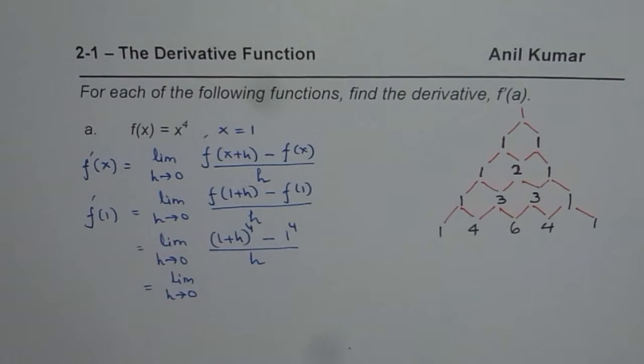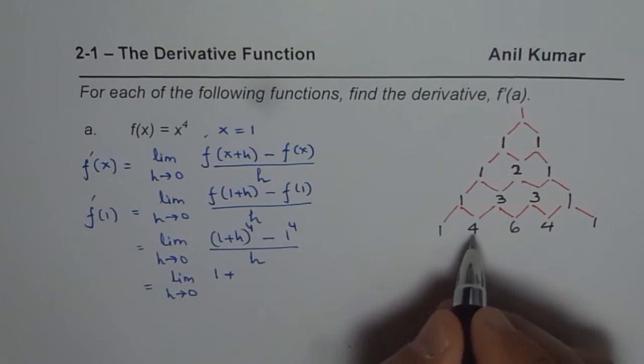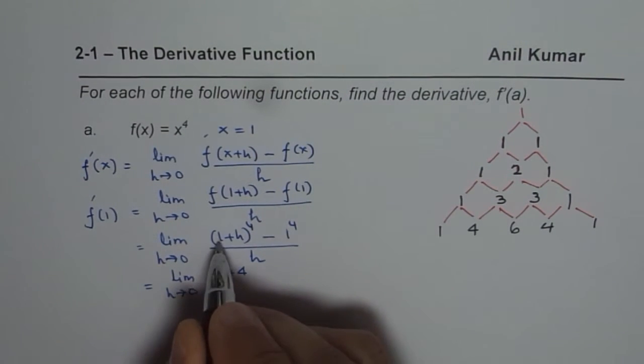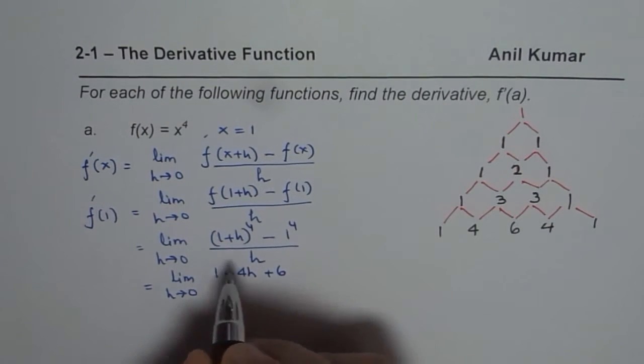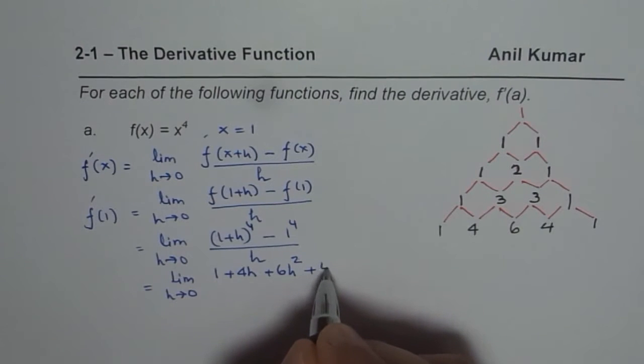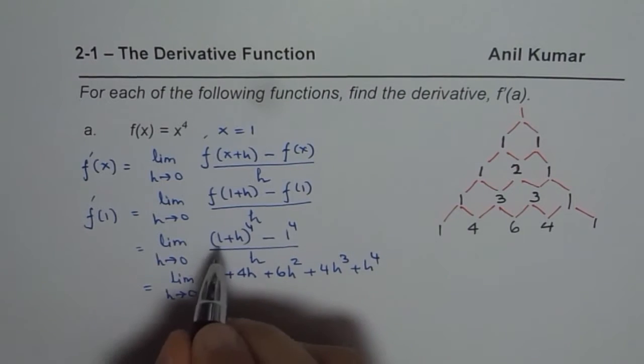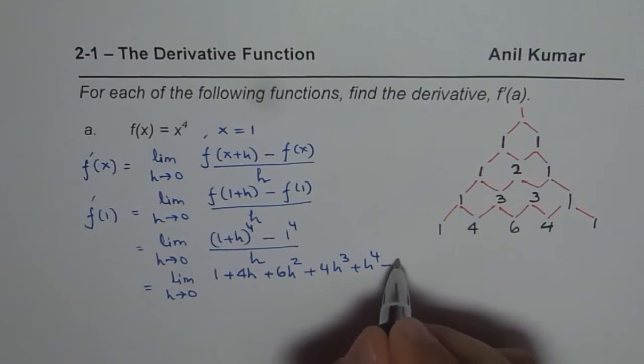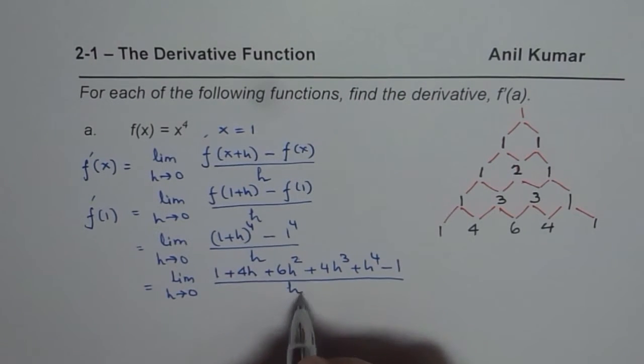(1+h) to the power of 4. So 1 to the power of 4, which is 1. Plus 4 times 1 cubed h, so I am writing 4h, plus 6 times 1 squared h squared, so this power increases. And then 4 times h cubed, and then 1 times h to the power of 4. So that is how you are going to expand this. For some of the students, I'd like them to review this concept. It is very important.